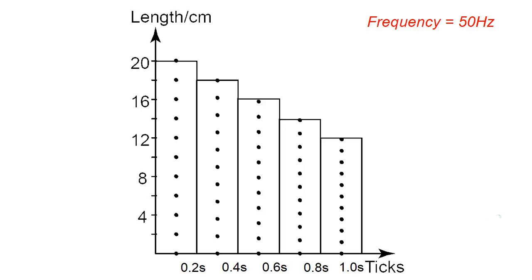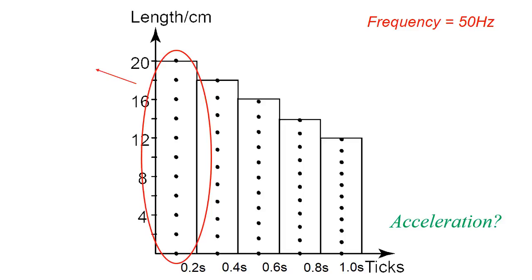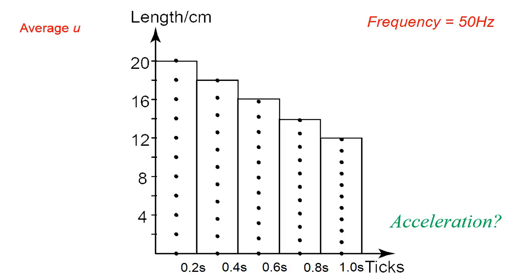Next, we move on to find the acceleration of the ticker tape. To calculate the acceleration, we need the initial velocity, the final velocity, and the time taken for acceleration to occur. The first 10-tick strip represents the initial velocity. To calculate the initial velocity, take the length of the first strip — 20 cm — and divide by the time taken for this strip, which is 0.2 seconds, giving 100 cm per second.